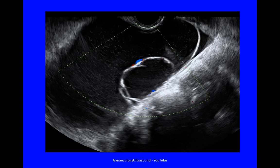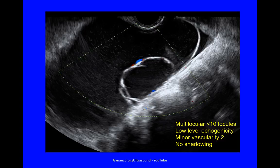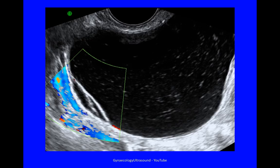Here are some examples. The first cyst was very large at 169 millimetres — multilocular with fewer than 10 locules, low level echogenicity, no solid material, minor vascularity with a score of 2, and no shadowing. The next example was 70 millimetres, again multilocular with fewer than 10 locules, no solid material, low level echogenicity, minor vascularity, and no shadowing. The third cyst was 67 millimetres — multilocular with fewer than 10 locules, no solid material, low level echogenicity with little dots visible in the cyst contents, minor vascularity just at the edge, and no shadowing.